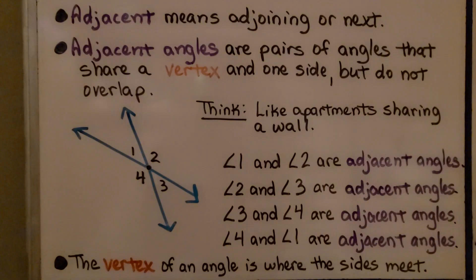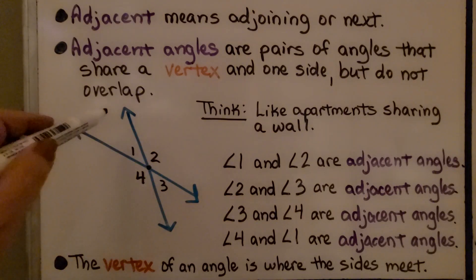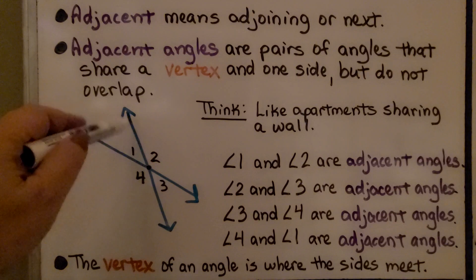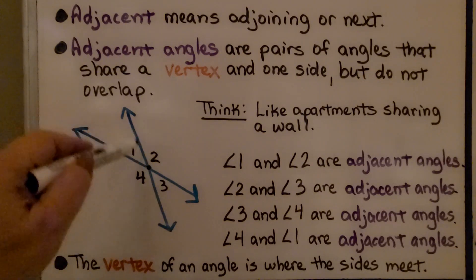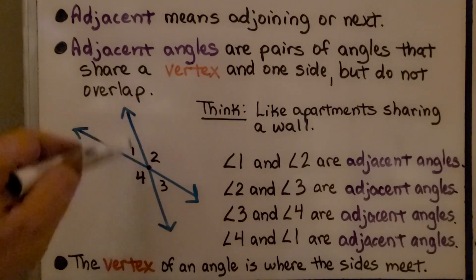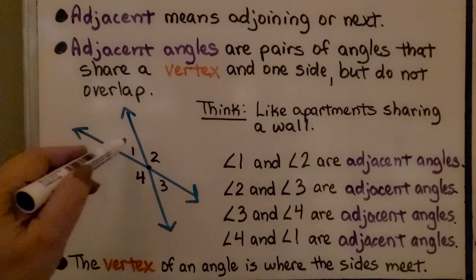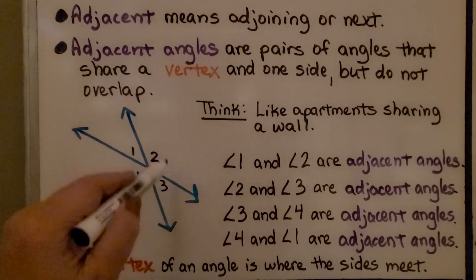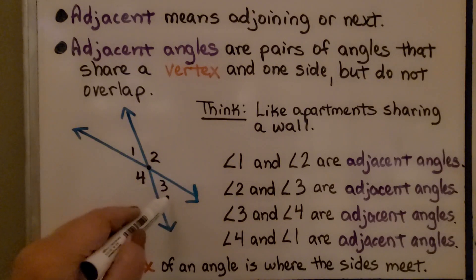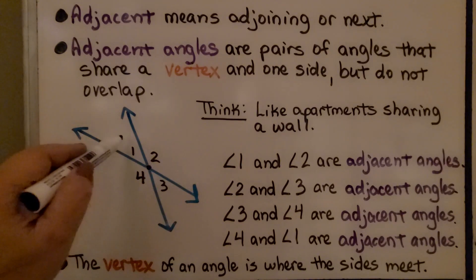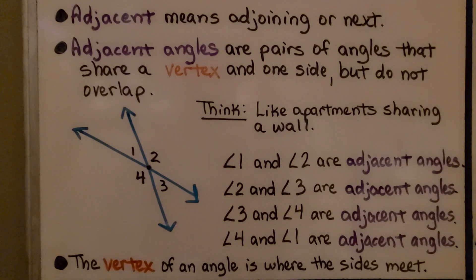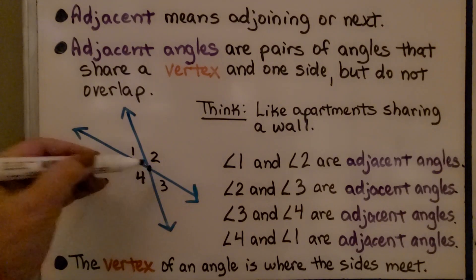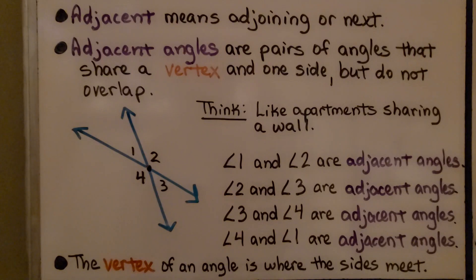Adjacent means adjoining or next. Adjacent angles are pairs of angles that share a vertex and one side, but do not overlap — they're next to each other. Think of it like apartments sharing a wall. So angle 1 and angle 2 share a side, making them adjacent. Angle 2 and angle 3 are adjacent, angle 3 and angle 4 are adjacent, and angle 4 and angle 1 are adjacent. The vertex is where the sides meet, right where the lines intersect.